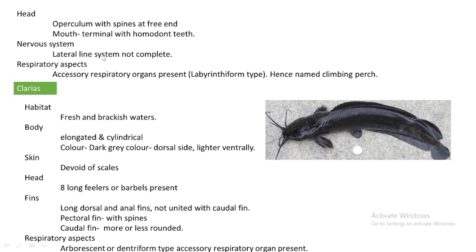Regarding the nervous system, the lateral line system is present. It is helpful for balancing and detecting the presence of objects in the surroundings. However, the lateral line system is not complete in Anabas.